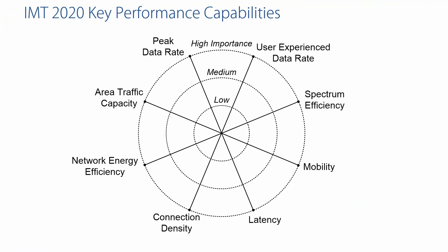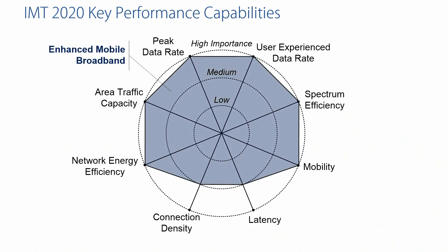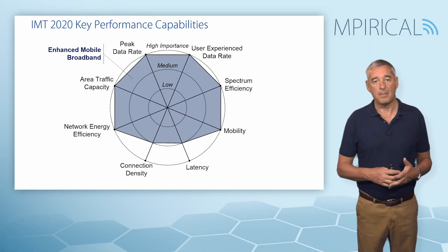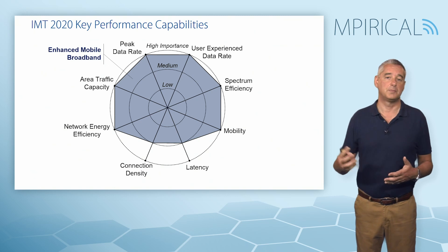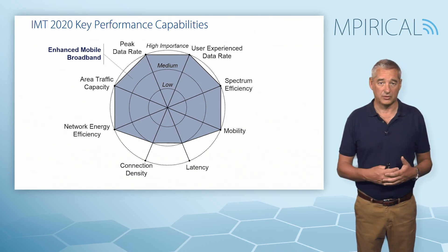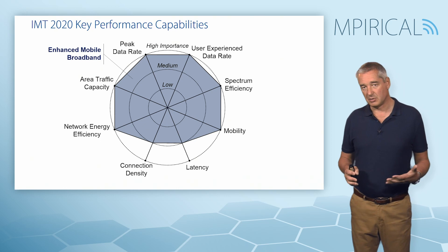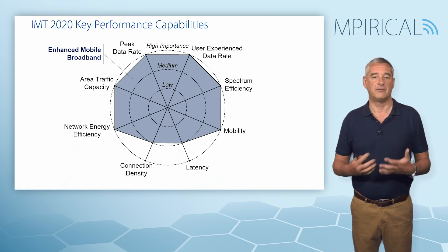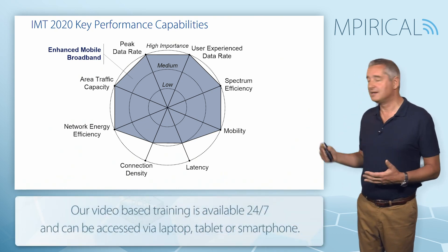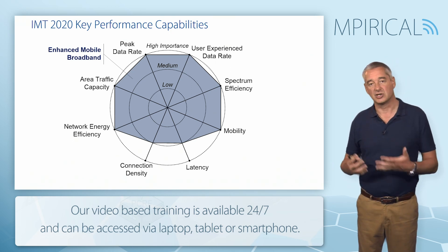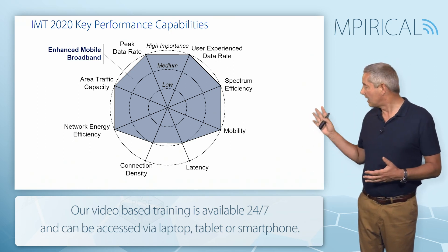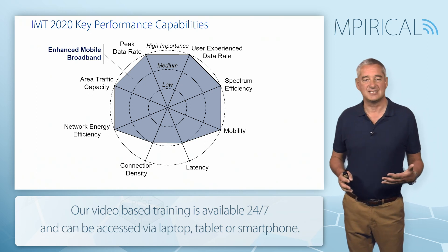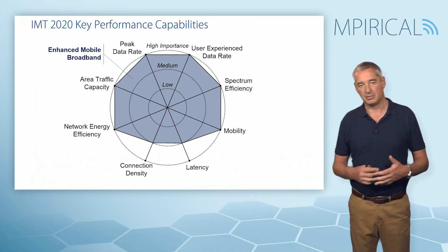For each of these criteria, they were ranked as either low, medium, or high importance, and we can see for the three different use cases how the various priorities lie. For enhanced mobile broadband, clearly the peak data rate and user experience data rate are going to be important, as is spectrum efficiency in terms of the volume of information. Mobility is also important — we expect to be travelling on high-speed trains and still maintain our connection. However, latency and connection density become slightly less important for this use case.